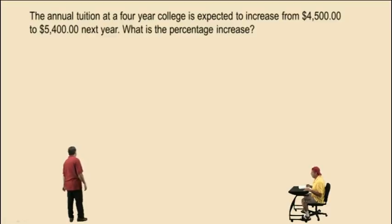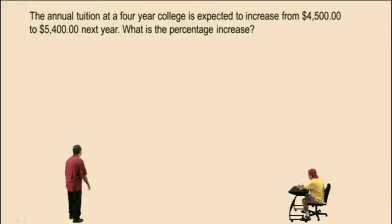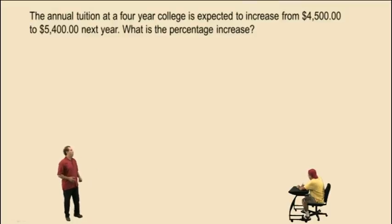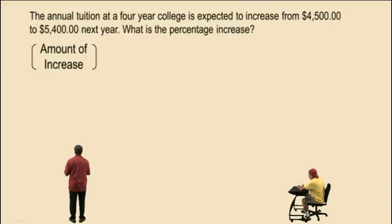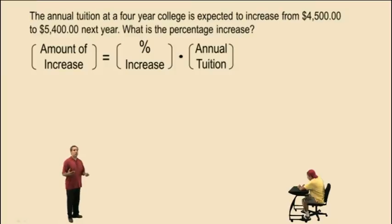This is a percent increase problem. The annual tuition at a four-year college is expected to increase from $4,500 to $5,400 next year. What is the percentage increase? Now, do you remember our structured format from our last two videos? It basically said to calculate a portion, you multiply the percent times the total. Our structured format for percent increase problems is: the amount of increase, which is the portion, is a percent of the total — in this case, a percent of the annual tuition before the increase.